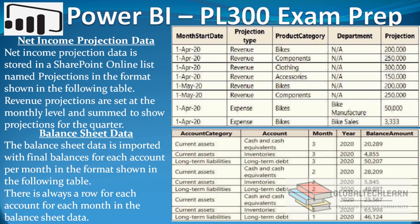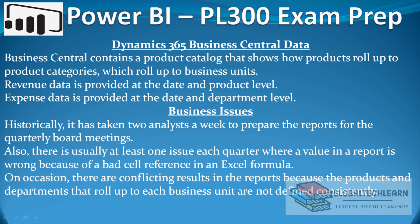Under net income projection data, we have fields like Month Start, Projection Type, Product Category, Department, and Projection. Then we have balance sheet data with fields Account Category, Account, Month, Year, and Balance Amount. Then for Dynamics 365 Business Central data.